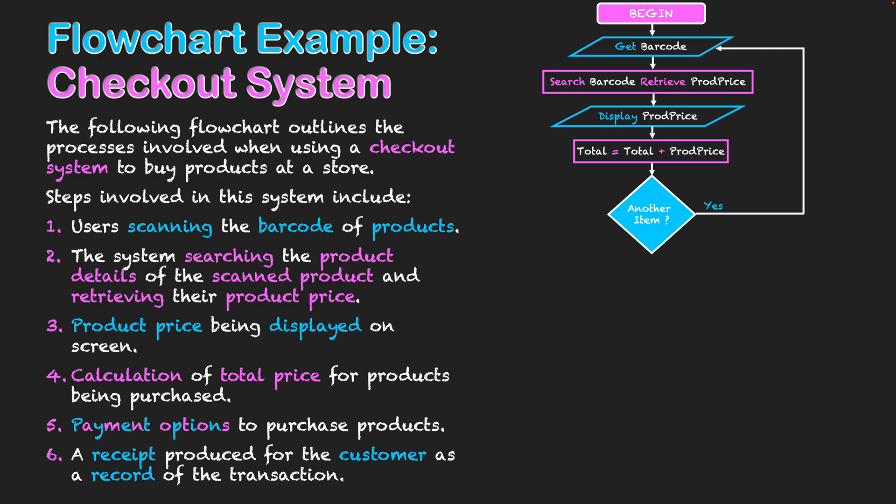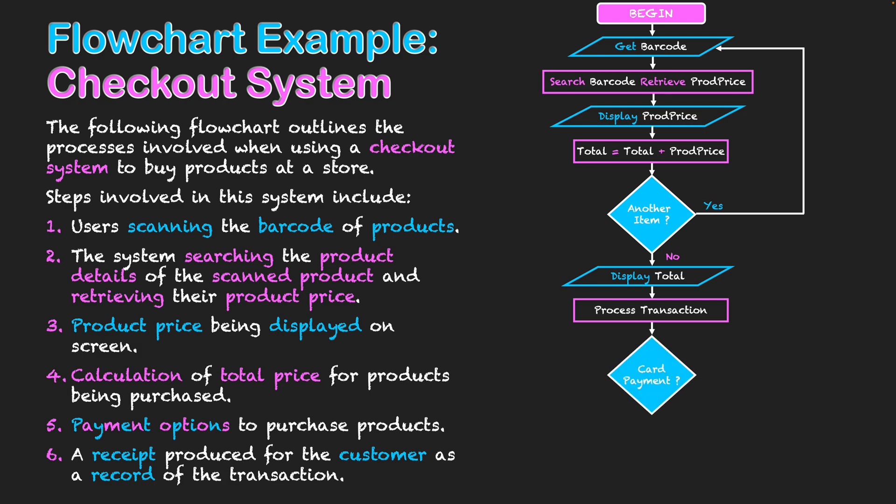Once there are no more items to scan, my total price will be displayed on screen — this is important because it's what I'm asking the customer to pay. The next step is to process the transaction. We then have another decision for a binary selection: deciding whether we're going to use a card payment.